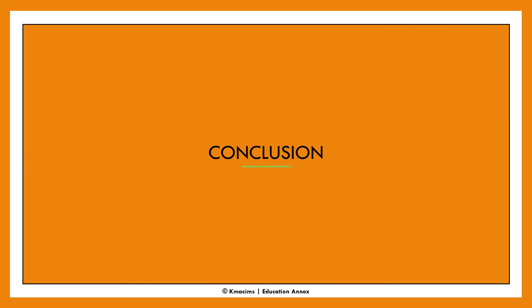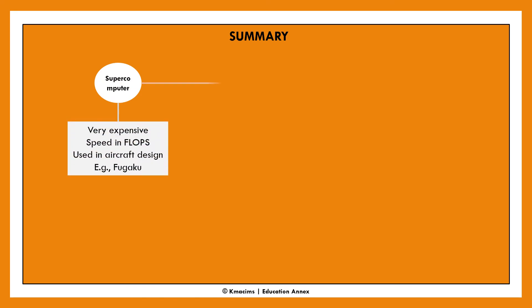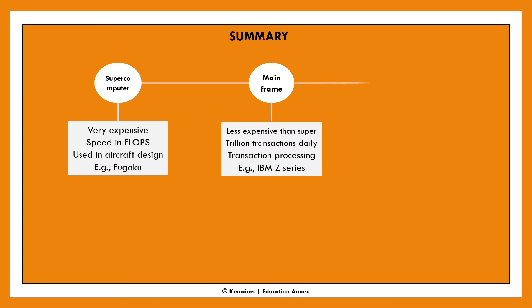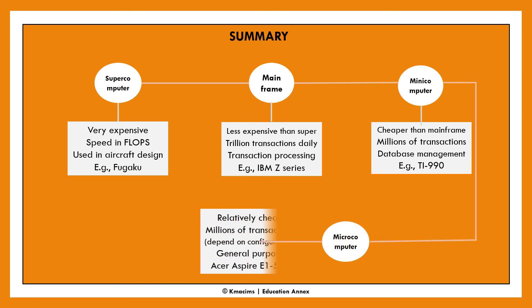In conclusion, the classification of computers by size can be divided into four: supercomputers, mainframe computers, mini computers, and microcomputers. Supercomputers are the most expensive, followed by mainframe computers, mini computers, and generally microcomputers, which are the least expensive.